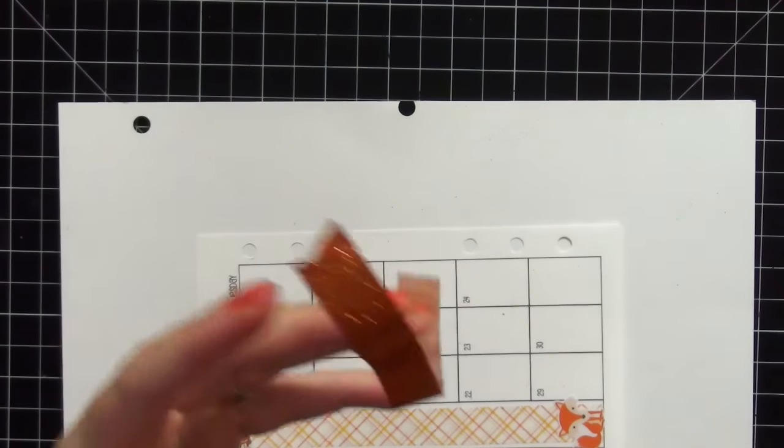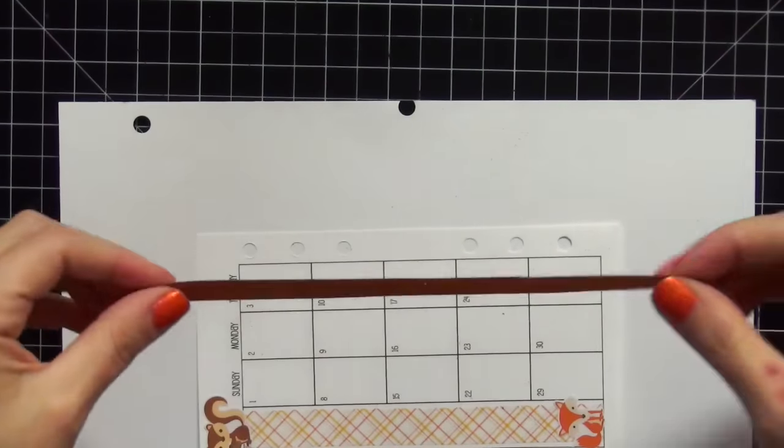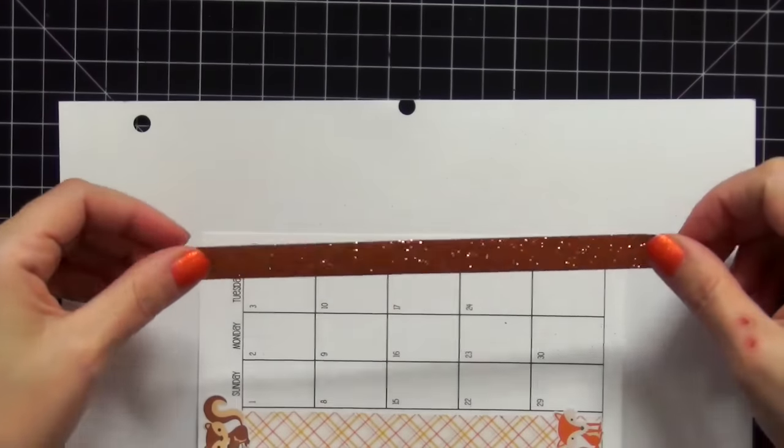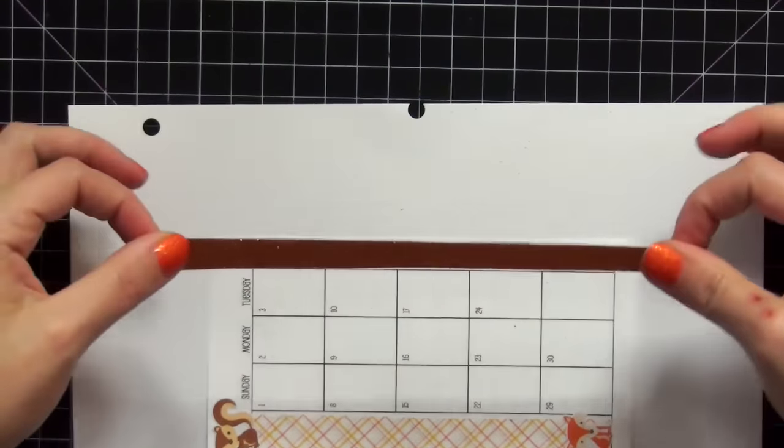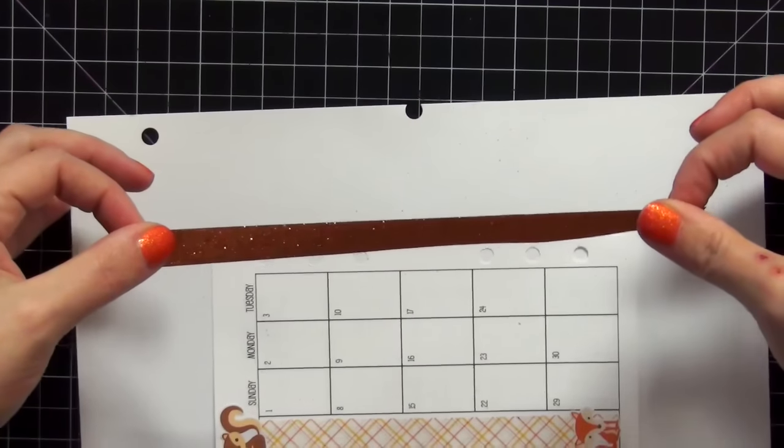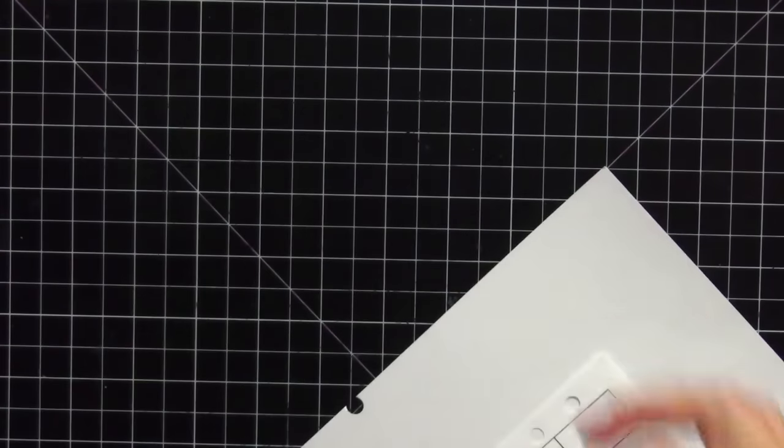I'm going to take the washi tape and I'm going to place it down where I want it to be. I might just pull this off screen because it's a little easier for me to center it when it's not at an angle and I'm right directly above it.